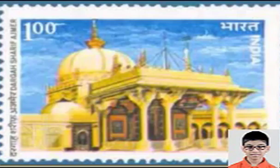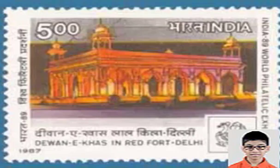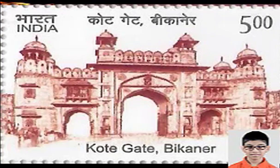The Indian independence movement was a series of activities with the aim of ending the British rule in India. The movement spanned over 90 years from 1857 to 1947.